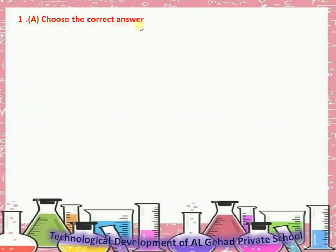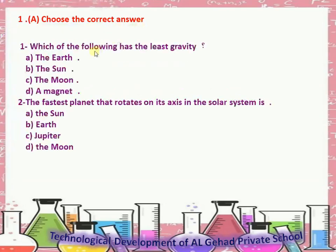Choose the correct answer. Number 1: Which of the following has the least gravity? Answer: The moon. Number 2: The fastest planet that rotates on its axis in the solar system is Jupiter.